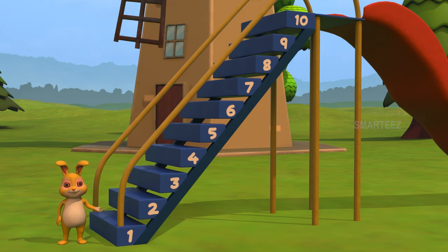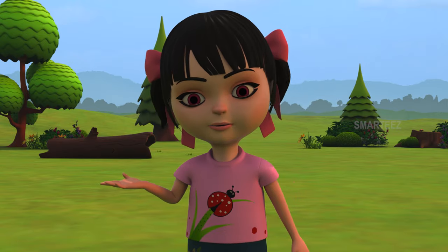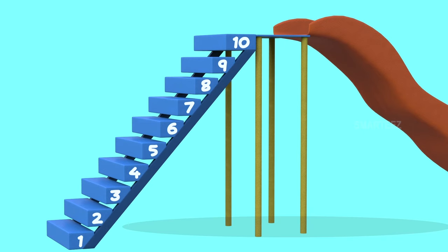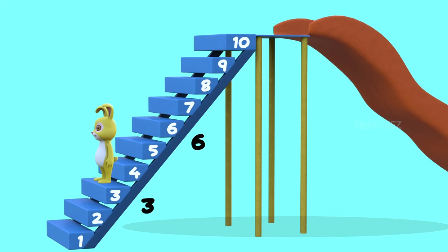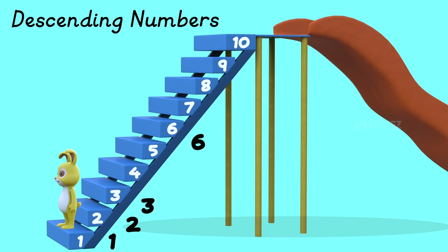I will hop down from 6 to 3, then to 2 and then to 1. Is this descending? Yes, it is descending. Let me explain. The bunny jumped from step 6 to step 3, then from step 3 to step 2, and finally from step 2 to step 1. So, the numbers went 6, 3, 2, 1. Since the numbers are going down, we call them descending numbers.